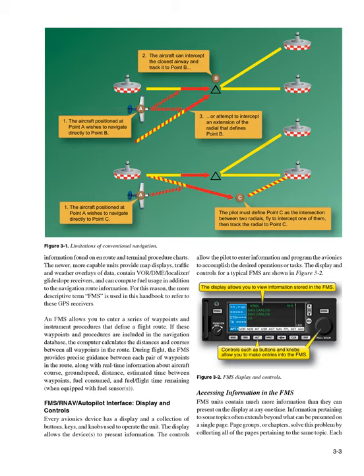FMS/RNAV/autopilot interface display and controls. Every avionics device has a display and a collection of buttons, keys, and knobs used to operate the unit. The display allows the device to present information. The controls allow the pilot to enter information and program the avionics to accomplish the desired operations or tasks. The display and controls for a typical FMS are shown in Figure 3-2.